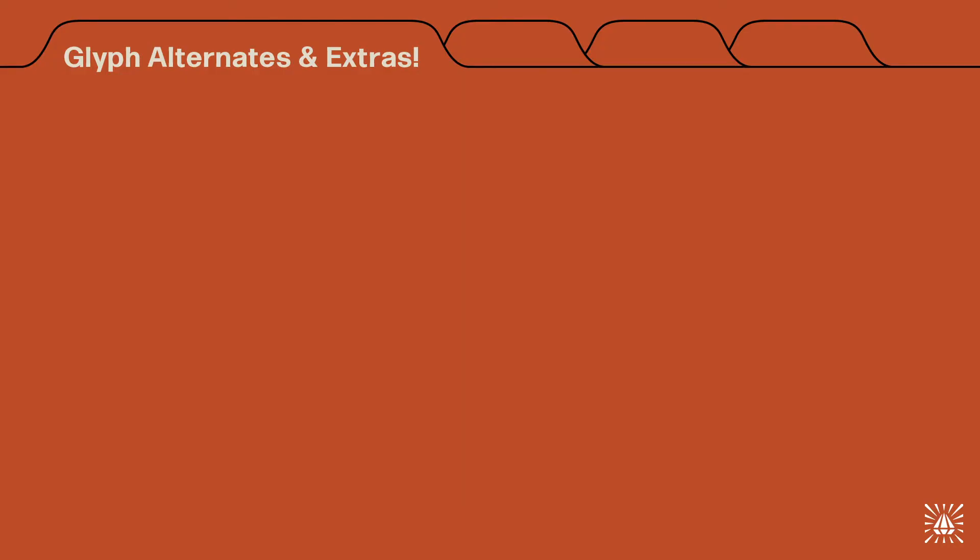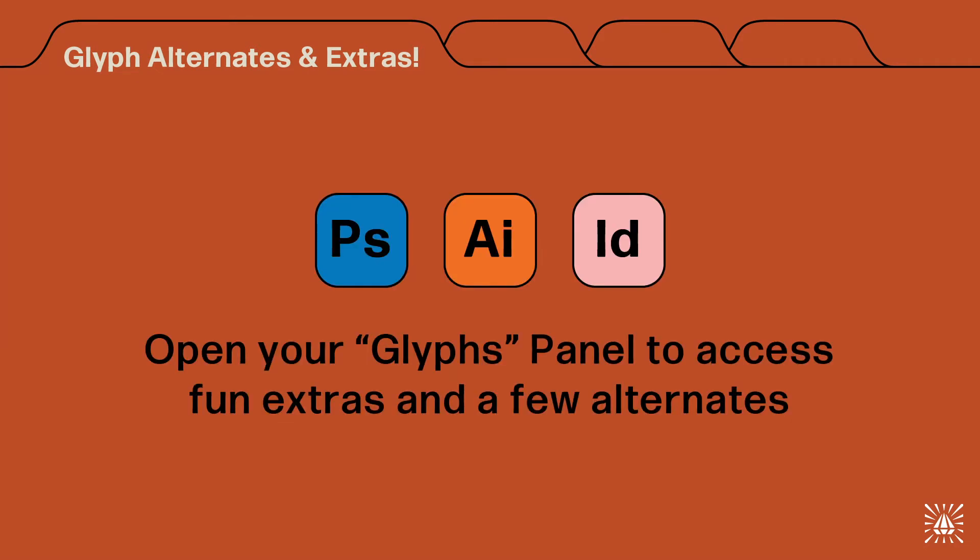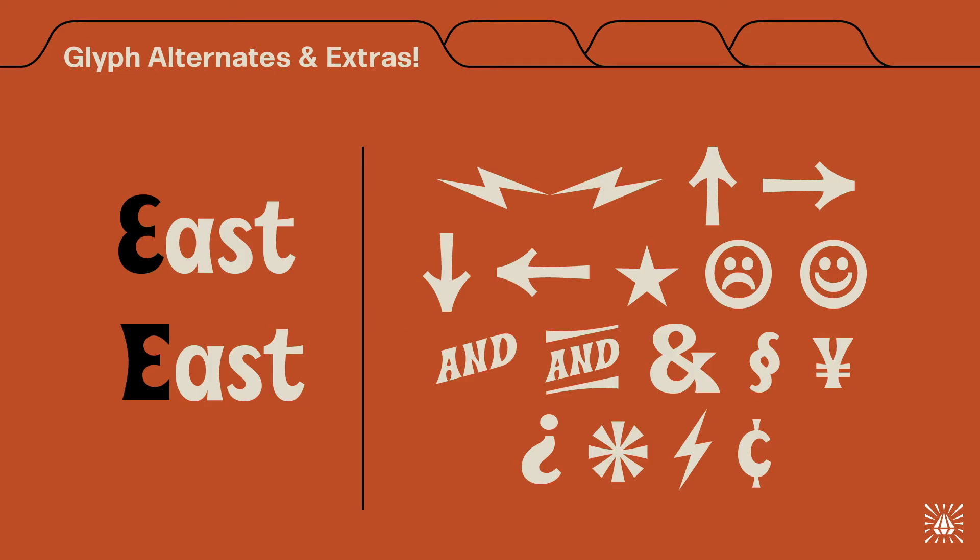As sure as Wes Anderson loves Bill Murray, as sure as Guy Fieri loves his goatee, as sure as LeVar Burton loves reading — you know this Hood's font comes with tons of fun extra glyphs and alternates. To access these extra glyphs, open the glyphs panel in your program of choice. Here you'll find things like an alternate E if you're not stoked on the backwards 3 E, plus things like lightning bolts, arrows, smiley faces, alternate ampersands, currency symbols — the list goes on.